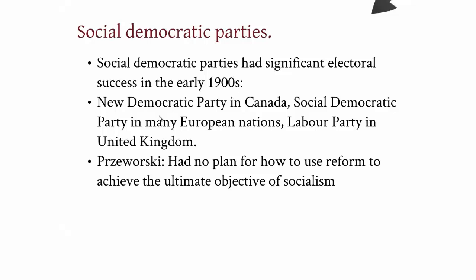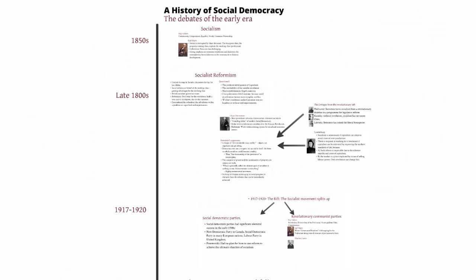Many different parties in European nations and beyond have been built on this reformist perspective — the New Democratic Party in Canada, social democratic parties in just about any given European nation, or Labour in the United Kingdom. Przeworski noted that these parties had no real plan for how to use reform to achieve the ultimate objective of socialism — how to get from capitalism to a classless society. That becomes important in the next tutorial, but for now this has been a presentation of the main debates within socialism during the early era.